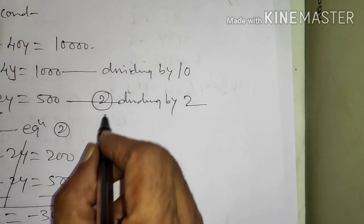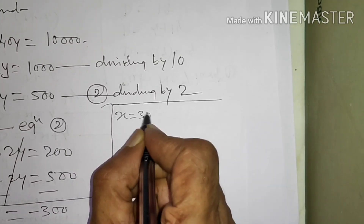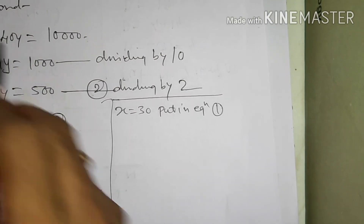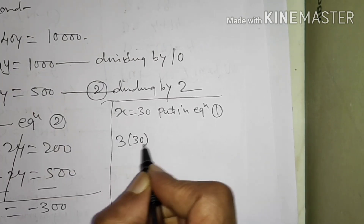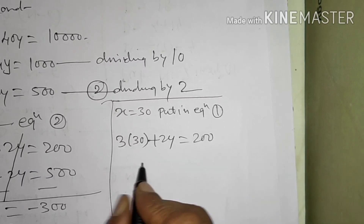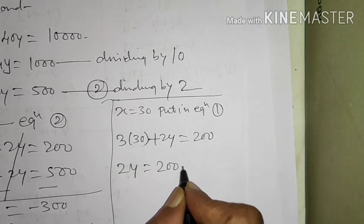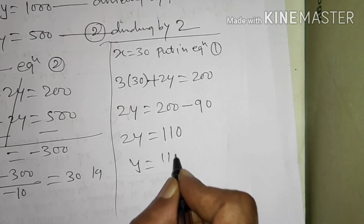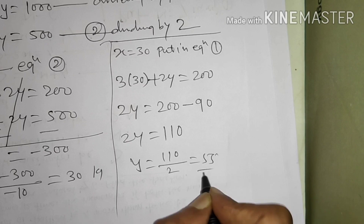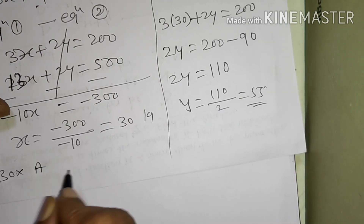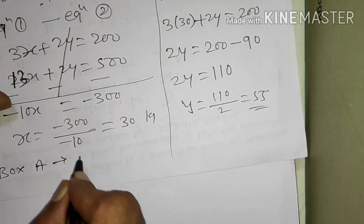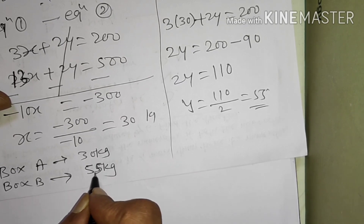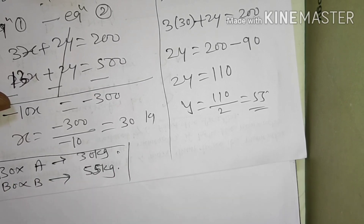Putting X equals 30 in equation 1: 3 into 30 plus 2Y equals 200. That is 90 plus 2Y equals 200, so 2Y equals 200 minus 90, which is 110. Therefore Y equals 110 divided by 2, equals 55. So capacity of box A is 30 kg and capacity of box B is 55 kg.